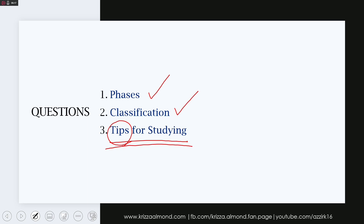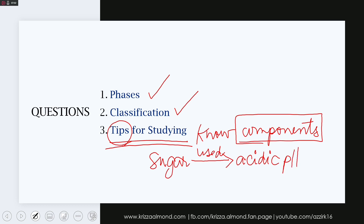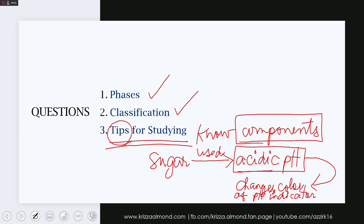If you are going to study culture media individually, you will have an easier time by knowing the components. If you know the components, you will have an idea of what is going to change in the culture medium. Several culture media include sugar as an energy source for organisms. When sugar is used, it creates acidic by-products, turning the pH of the culture medium acidic. If the pH becomes acidic, it will change the color of the pH indicator, so knowing the pH indicator tells you the color reaction for your organism.